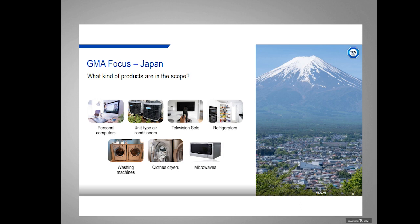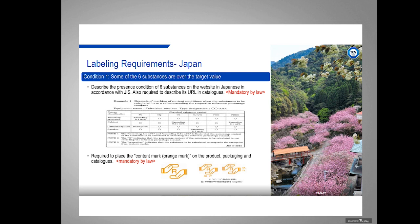The products in scope of the JMOS scheme are computers, air conditioners, TVs, refrigerators, washing machines, clothes dryers, and microwaves — a short list of products. Japan has different labeling requirements depending on the condition of the product. If some of the six substances are over the limit, they're still allowed, but you must notify that you have an excess amount on the label using the orange mark, then list what substances are over the limits — the initials of those substances are indicated on the label.